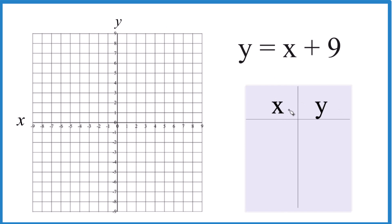I'm going to choose values for x I know are going to fit on the graph here. So if I put 0 in for x, 0 plus 9, that would give me a 9 for y. That would be way down here.